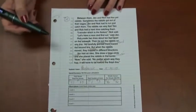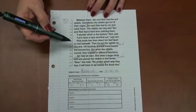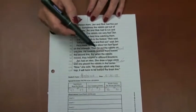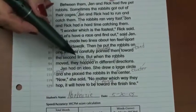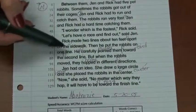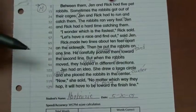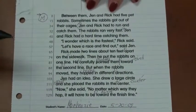so what you observe the child doing is that there are certain words that she's miscalling. She called pointed, painted. She called hopped, hoped, and she had long pauses before some of the words.